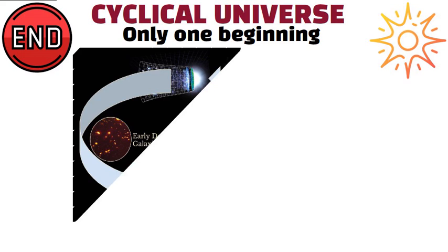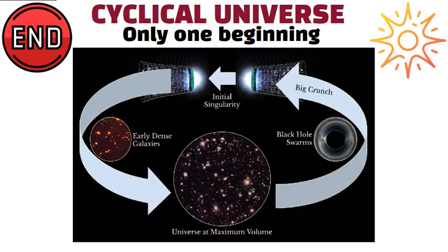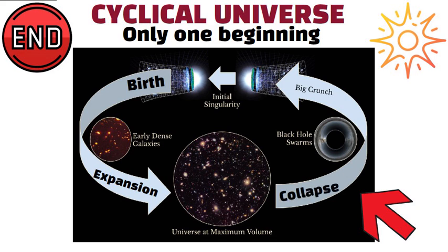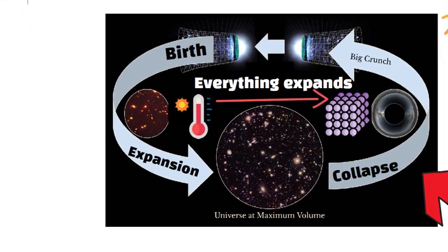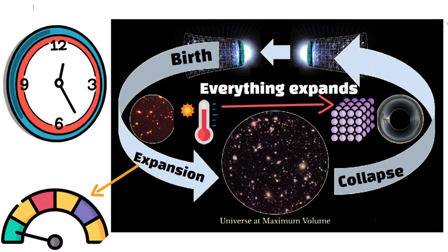Cyclical Universe. Instead of having only one beginning, the Big Bang, and one possible end, a cyclical or oscillatory model suggests the universe goes through infinite cycles of birth, expansion, and collapse. In one cycle, everything expands outward from a hot, dense state. Over an extremely long time, the expansion might slow and reverse, leading to a big crunch.